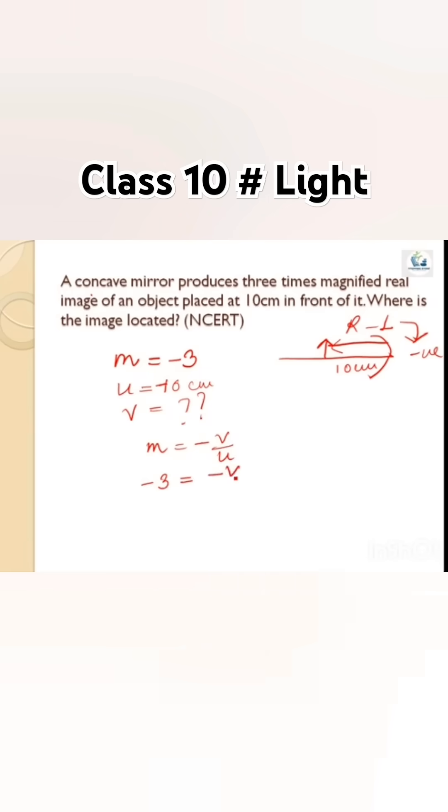The magnification is minus 3. So minus 3 equals minus v divided by minus 10, which gives v equals minus 30 centimeters. The image is located at a distance of 30 centimeters in front of the mirror.